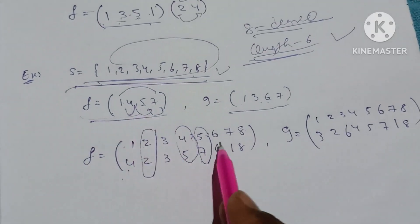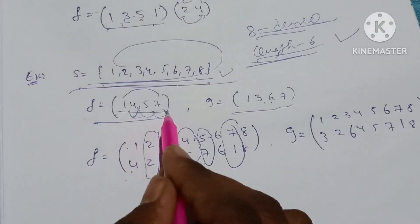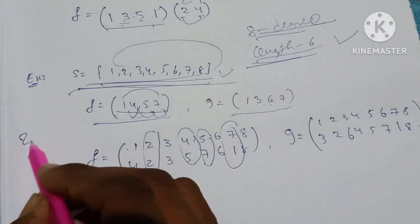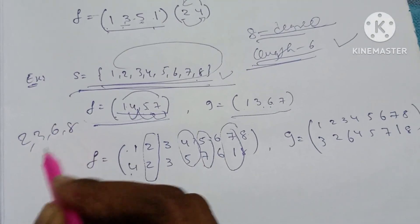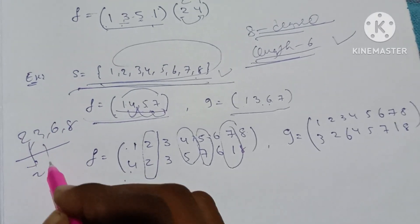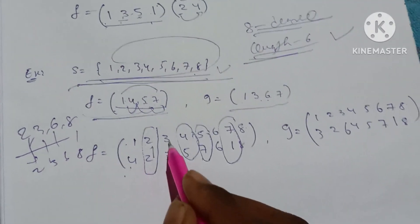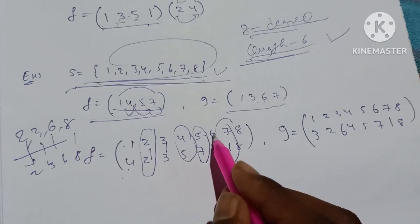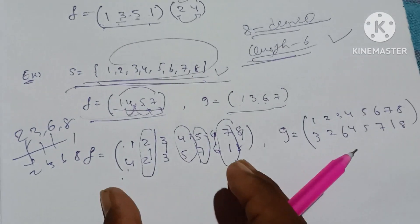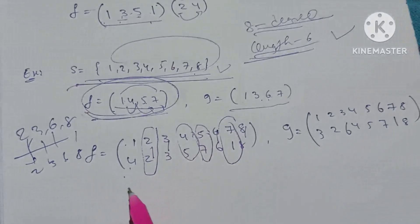So 7 is 1. The remaining elements are 2, 3, 6, 8 — we write the same values: 2, 2; 3, 3; 6, 6; 8, 8. So we have a cyclic parameter and we write the same parameters.